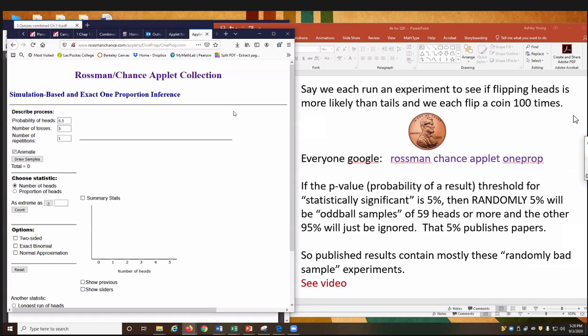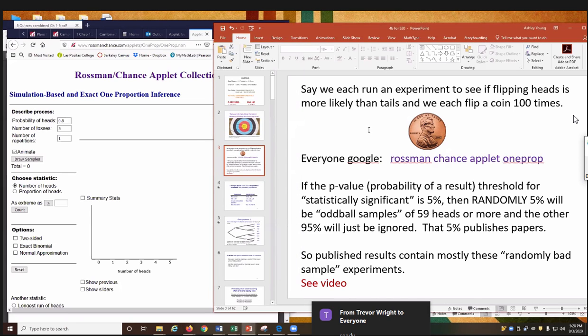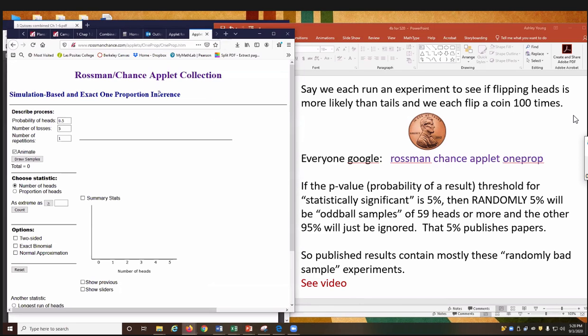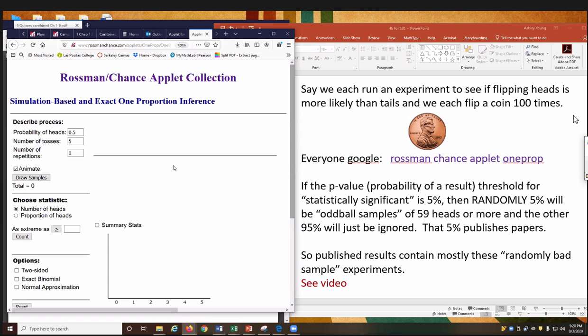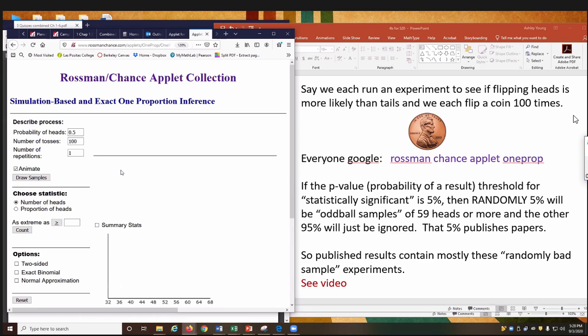We're going to each flip a coin a hundred times. So everybody Google Rossman Chance Applet One Prop. So I'm going to go to that. I'm going to Google Rossman, R-O-S-S-M-A-N Chance Applet One Prop. All one word. Google it. It'll come up right here. If you do the whole word, if you include one prop, it'll be his first one right here. If you just did Rossman Chance Applet, for some reason, you didn't put in the one prop, then you're going to want to grab this first one that says one proportion inference right there.